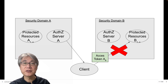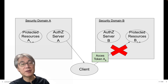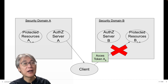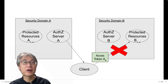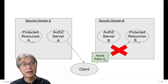The authorization server A can try to issue an access token for protected resources in domain B. But why should they honor them? An authorization server in one security domain by definition cannot mint an access token for another security domain. If it could, then they belong to the same security domain.